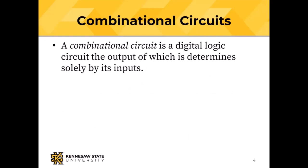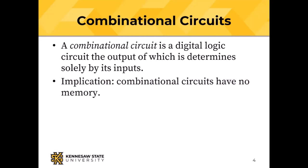A combinational circuit is a digital logic circuit whose output is determined solely by its inputs. The inputs of a combinational circuit determine the output — it goes through all those gates and gets processed — but the implication is that combinational circuits have no memory. The kind of circuit that has memory is called a sequential circuit.